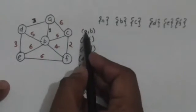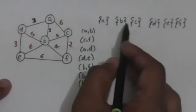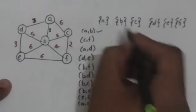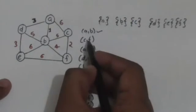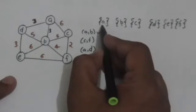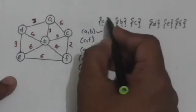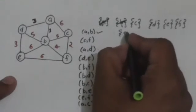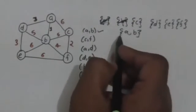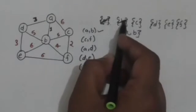First of all we will check edge AB. Vertex A and vertex B are both in different sets, so we will select this edge to include in the minimum spanning tree. We will unite the sets containing vertex A and vertex B, and we will get a new set which is the union of the set containing vertex A and the set containing vertex B.